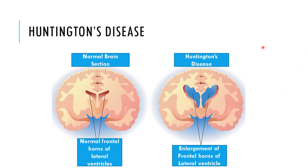Next in nerve impairment is Huntington's disease. In Huntington's, there are poorly coordinated jerky movements and persistently bent knees. The image shows cross-sections of the ventricles — you can see the normal brain section with normal frontal horns of the lateral ventricles, compared to Huntington's where there is enlargement of the frontal horns of the lateral ventricles. Because of this, there is poor coordination, jerky movements, and often uncontrolled arm and head movements.